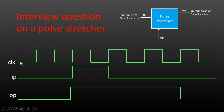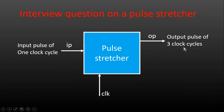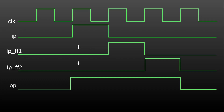Let me explain its behavior with the help of timing waveforms. This is a continuous clock signal. This is input IP, and on this IP signal I have one clock cycle of pulse. This is the requirement which is OP — OP is three clock cycles of pulse. Now you can pause the video here and try to think of its design. Let me reveal the behavior of the pulse stretcher with the help of timing waveforms.